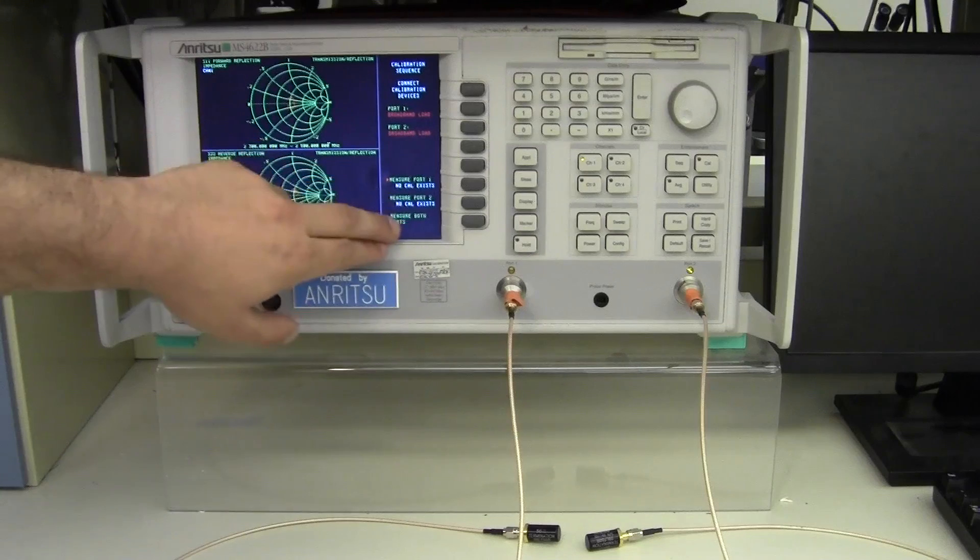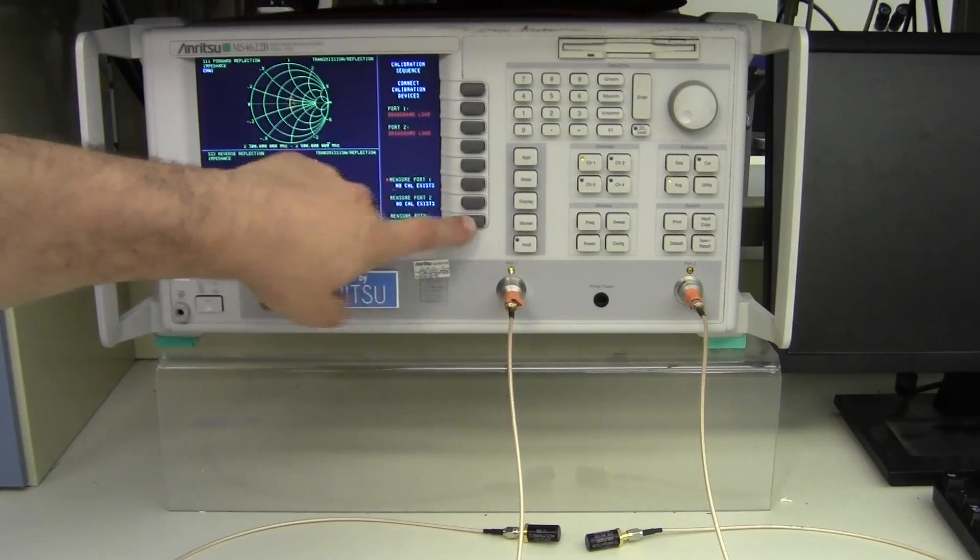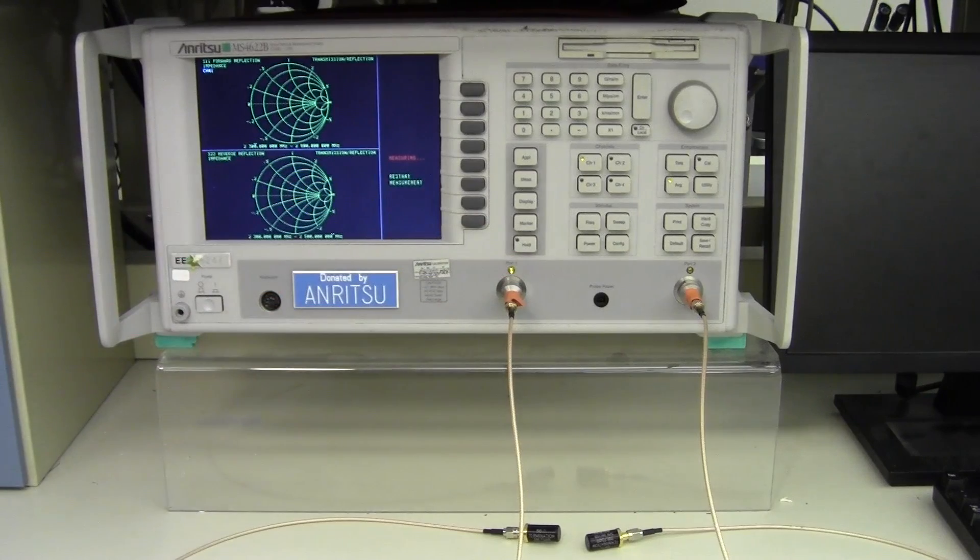You can either measure port one, measure port two, or you can ask it to measure both one after the other. And so now the vector network analyzer will very slowly sweep from our low range to our high range, which in my case right now is 2.3 to 2.5 gigahertz. But for whatever project you're working on, you will need to select your own frequency range, and it very carefully measures the impedance of a quote perfect match from the RF generator of the VNA all the way to this quote perfect load.